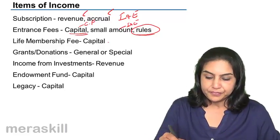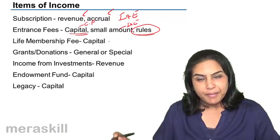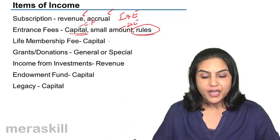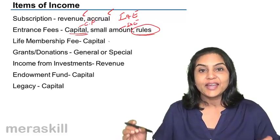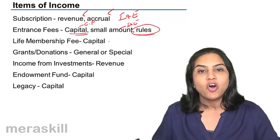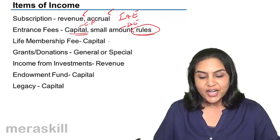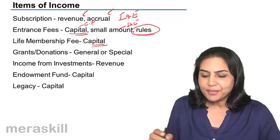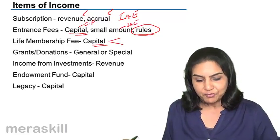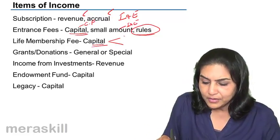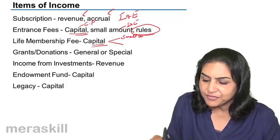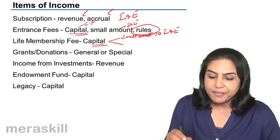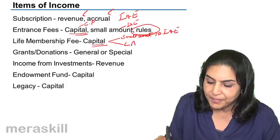Next is life membership fee. A life membership fee is paid for life — thereafter the person does not have to pay subscription or membership fees. It is paid in one lump sum at the beginning when the person joins the particular club, society, or non-profit organization. Such a life membership fee is normally capitalized. There may be two ways of treating the life membership fund: one, a small amount every year is transferred to the income and expenditure account, or it remains in the life membership fund.